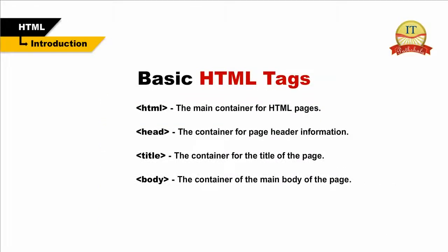Basic HTML tags. The basic structure for all HTML documents should include the following minimum elements: HTML, the main container for HTML pages; Head, the container for page header information; Title, the container for the title of the page; and Body, the container for the main body of the page. We shall discuss each of these tags one by one in detail. In this tutorial, you may find the terms element and tag used interchangeably.